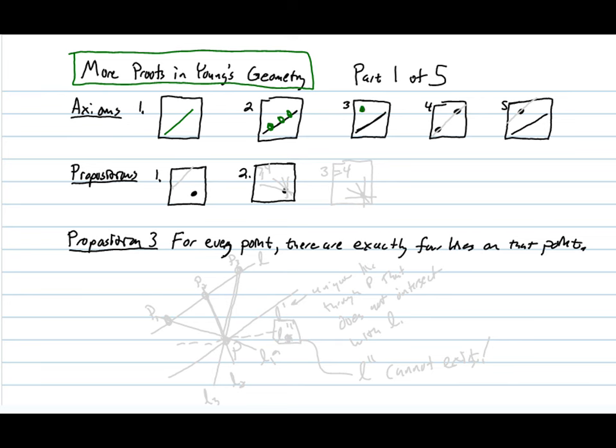Axiom 4 says that given any two distinct points, there exists exactly one line through them. And Axiom 5 says given any point that's not on a given line, then there exists exactly one line through that point that does not intersect the given line.